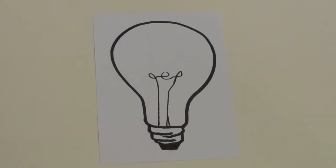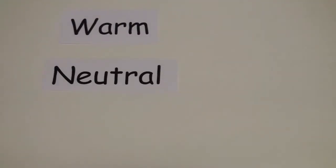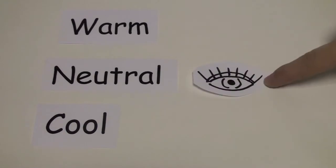Kelvin temperature can also categorize lamps. They can be warm, neutral, or cool. This describes how they appear visually.